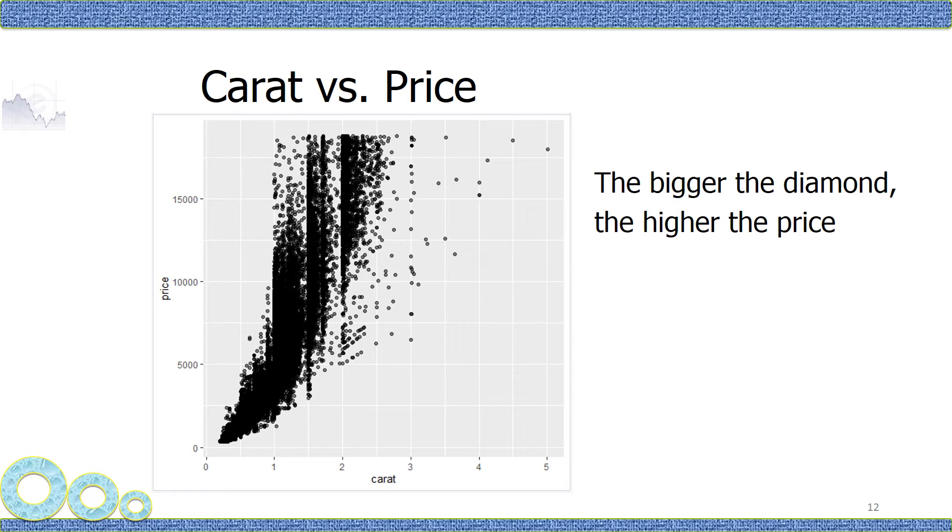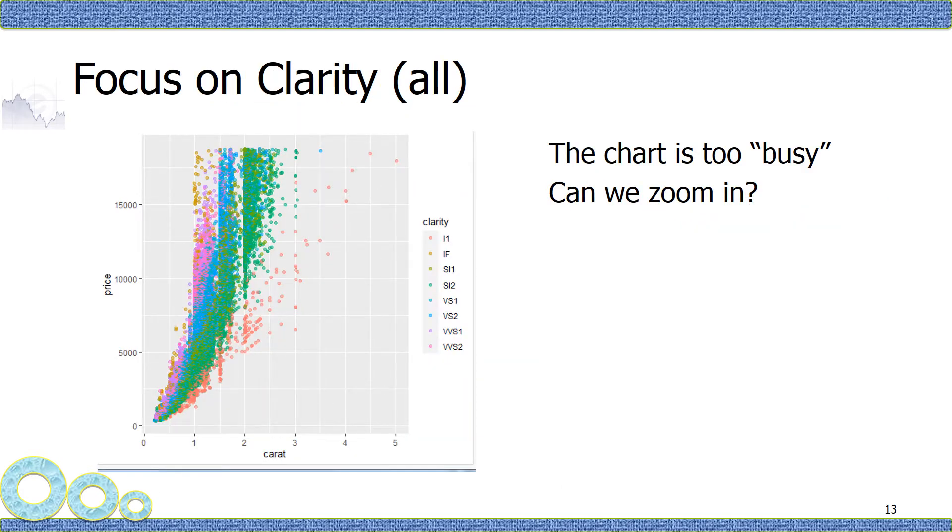The first thing we will analyze is the relationship between carat and price. We all know that as diamonds get bigger, usually the price goes up. For this chart, I added a third dimension, clarity. As you can see, the orange dots represent the worst clarity and it significantly reduces the price. But you can also tell the chart is too busy. Can we just take a look at some subsets of the data?